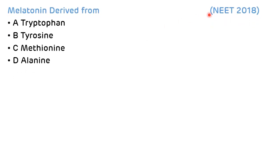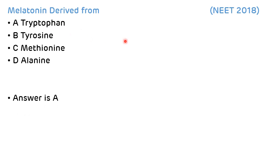The second question, asked in NEET 2018: melatonin is derived from — A) tryptophan, B) tyrosine, C) methionine, or D) alanine. Please don't confuse melatonin with melanin. Melanin is the pigment synthesized from tyrosine, while melatonin is the hormone synthesized from tryptophan. Other substances synthesized from tryptophan include niacin (vitamin B3) and the neurotransmitter serotonin. The correct answer is A.